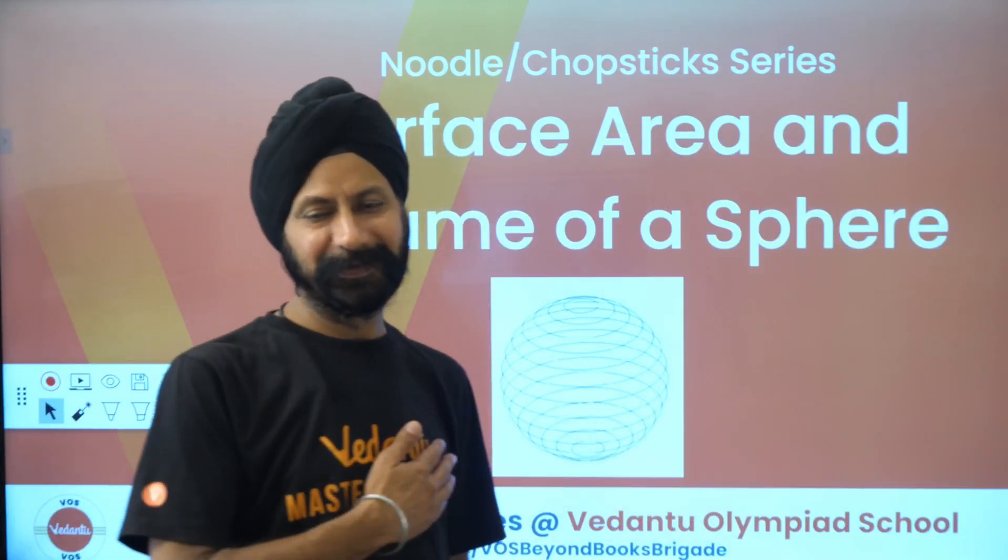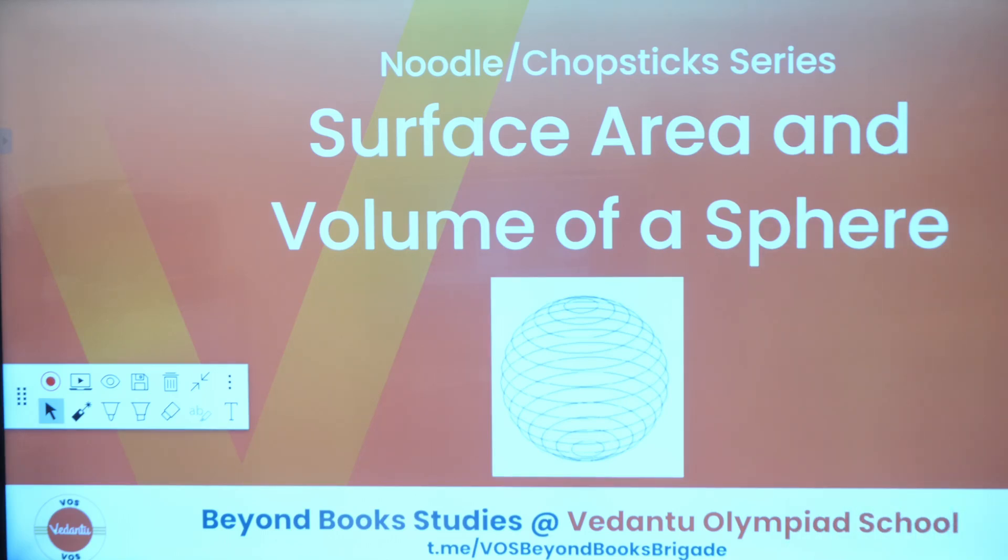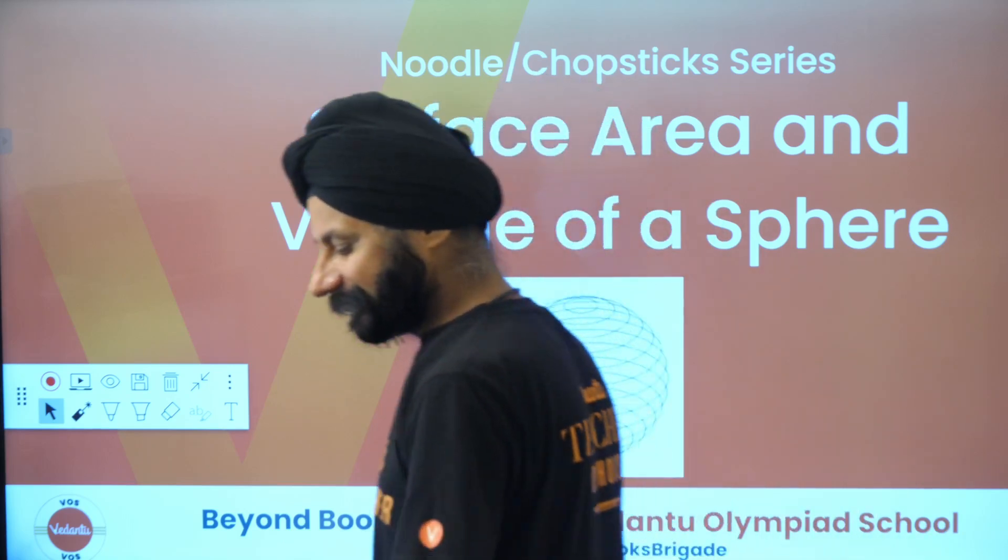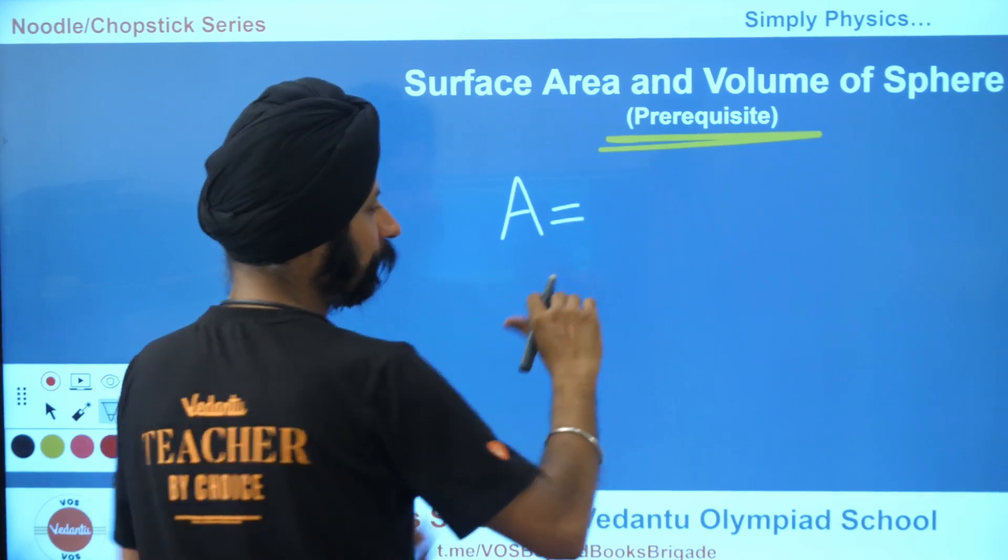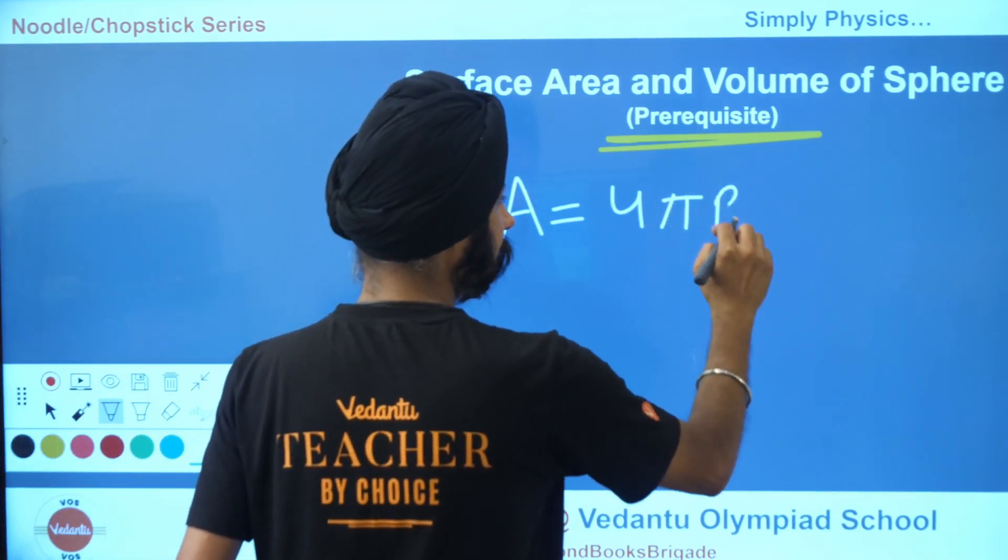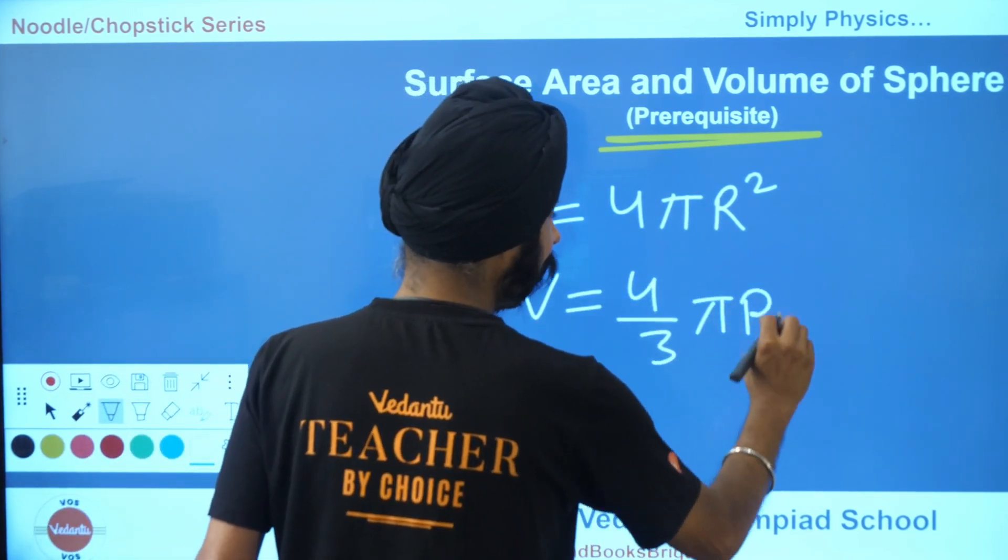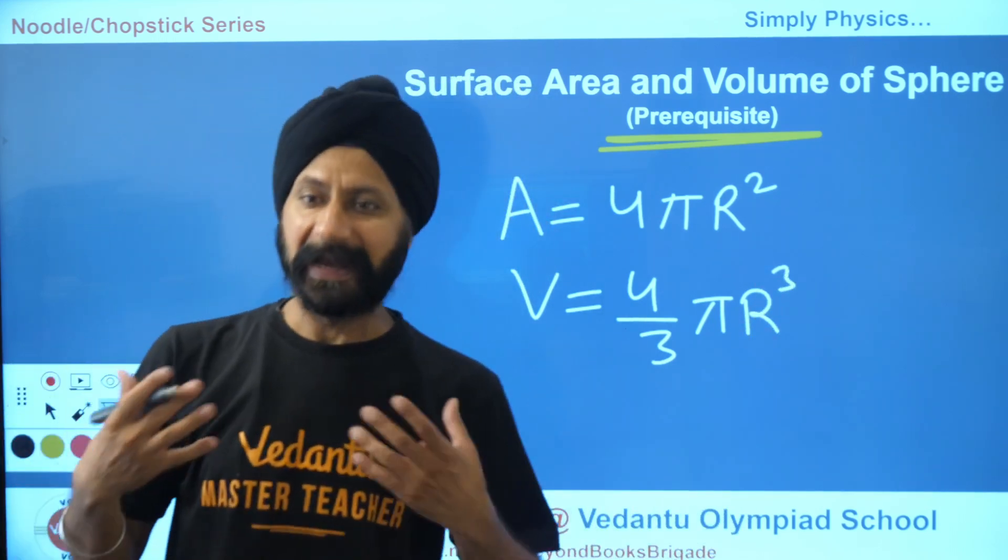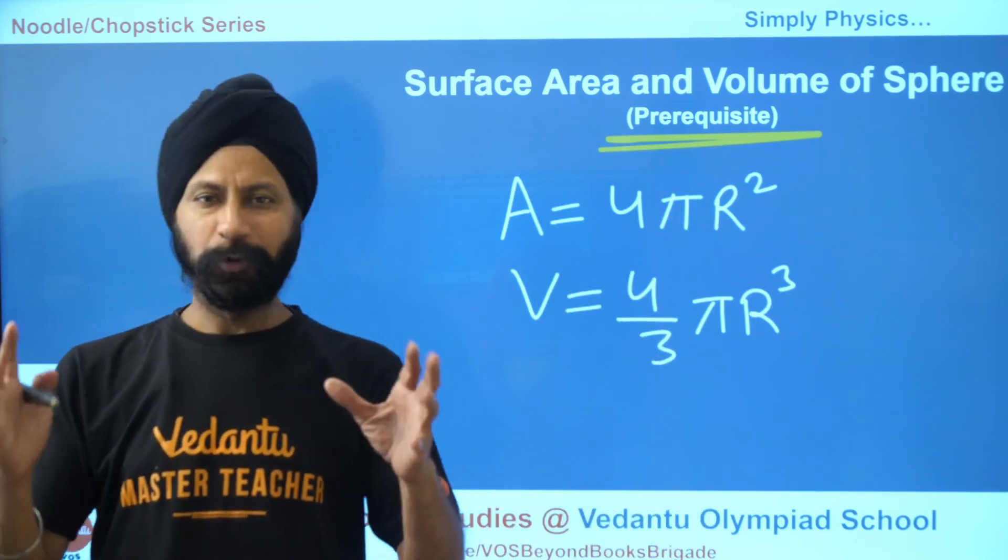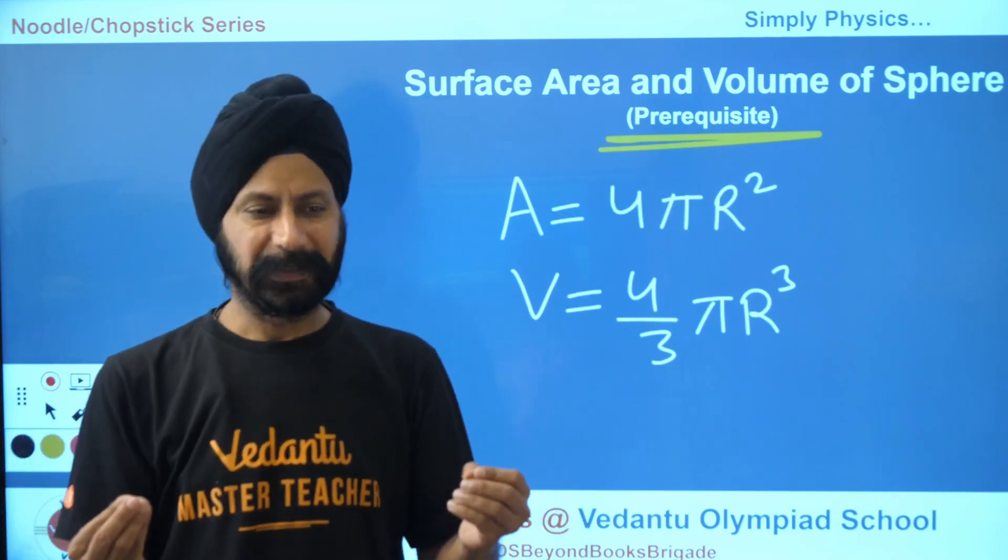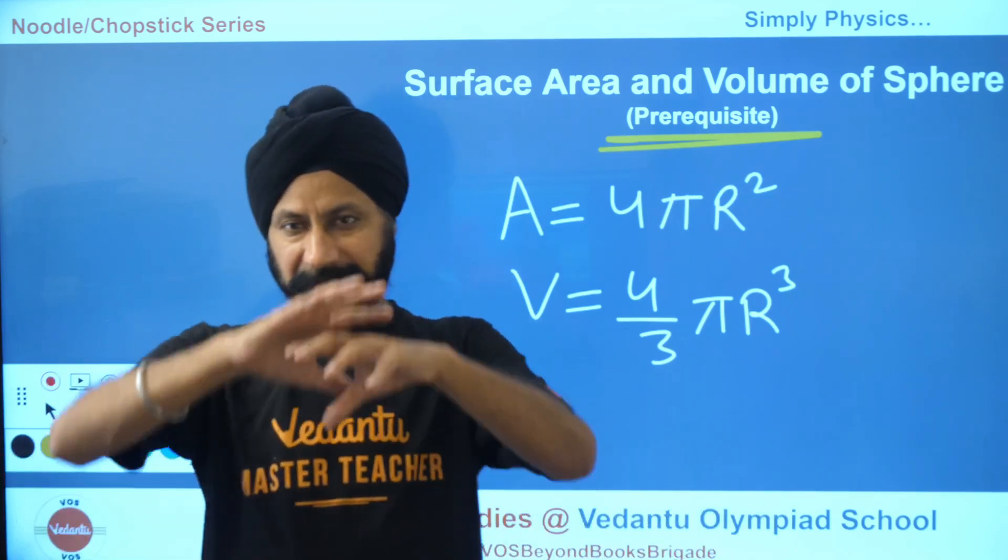Today we're going to talk about something very close to my heart, and a little history about it. When I was a child, I was told that the surface area of a sphere is 4πr². So as a child when I was in school, I was told, Bhavdeep, memorize that the surface area of a sphere is 4πr². And the same teachers told me memorize that the volume is 4/3 πr³. I don't think there's any challenge in memorizing this, but as a curious child, I was curious about why it's 4πr².